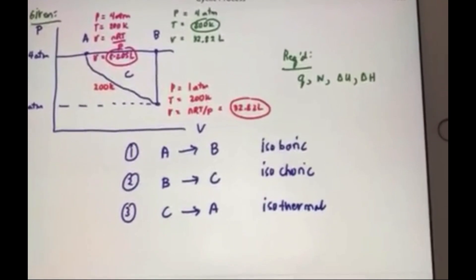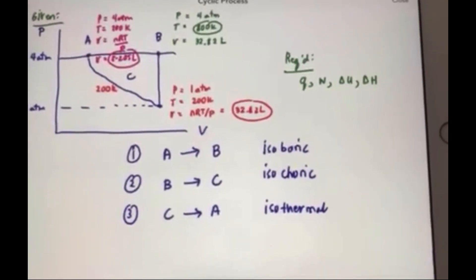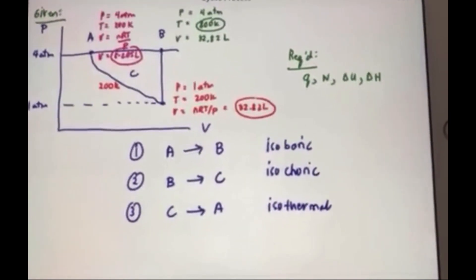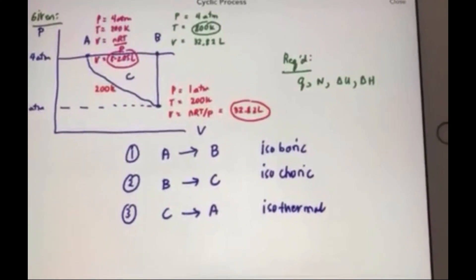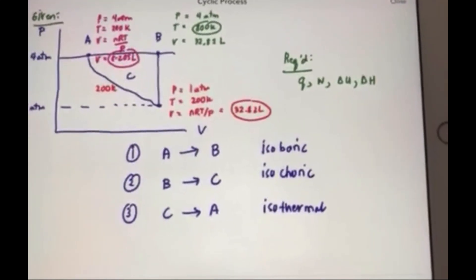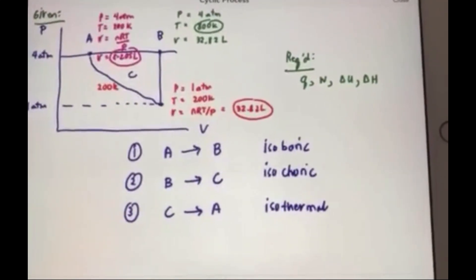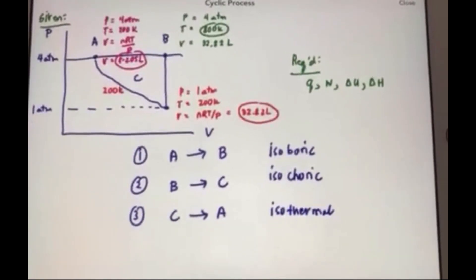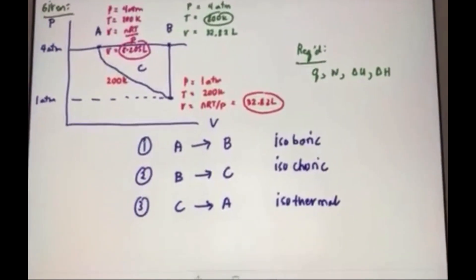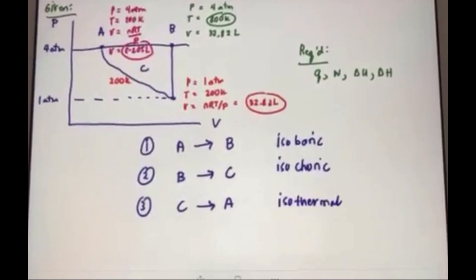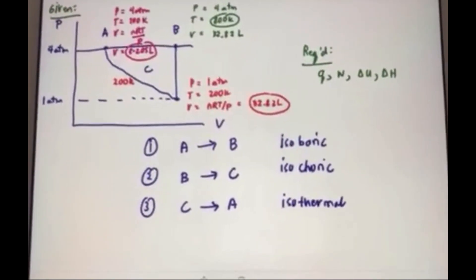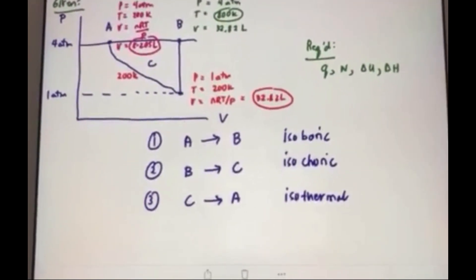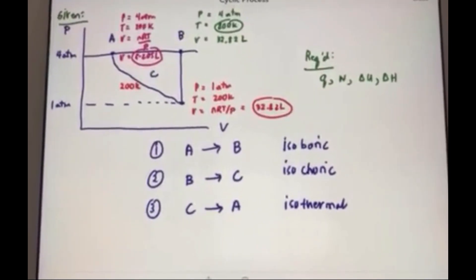So we are given three steps here. From step a to b, it's an isobaric process. B to c, it's an isochoric process. And c to a, it's an isothermal process. So for each step, we will be solving for q, w, delta u, and delta h.